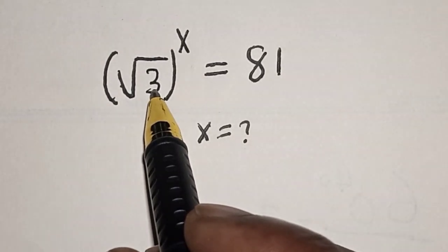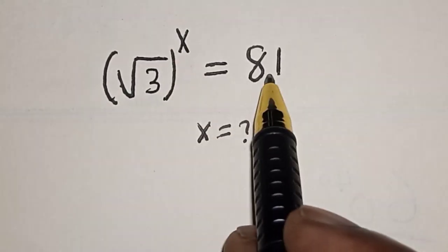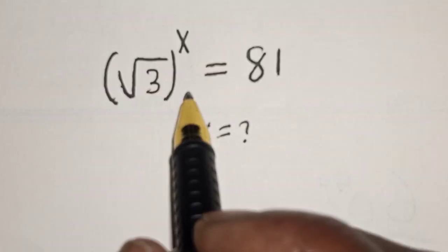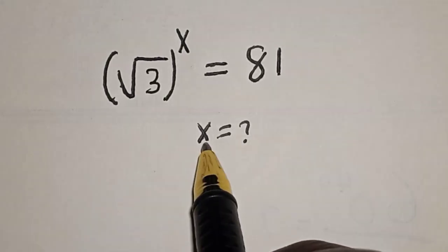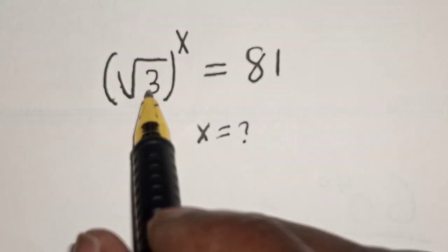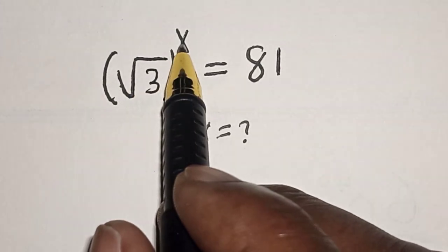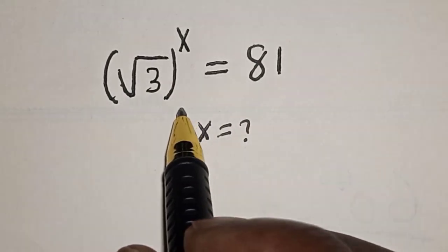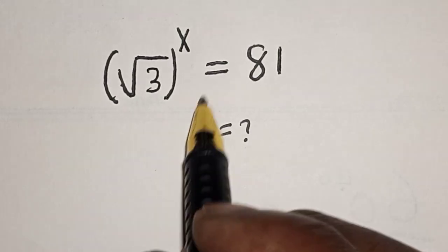Square root of 3 raised to power x is equal to 81. What is the value of x? Hi everyone, welcome to my class. In this class we want to find the value of x from this equation: square root of 3 raised to power x is equal to 81.